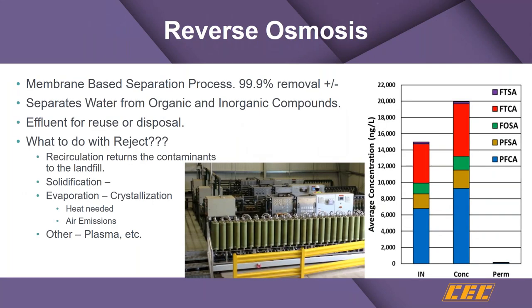Reverse osmosis is a very well used technology for contaminated groundwater, and we're using it at a number of landfill leachate sites we're designing. This is a membrane separation device that removes virtually all long and short chain PFAS constituents as well as VOCs and other contaminants. You'll find 80 to 90% of the water comes out as permeate, and somewhere 10 to 20% of the flow as a reject that would have to be managed.